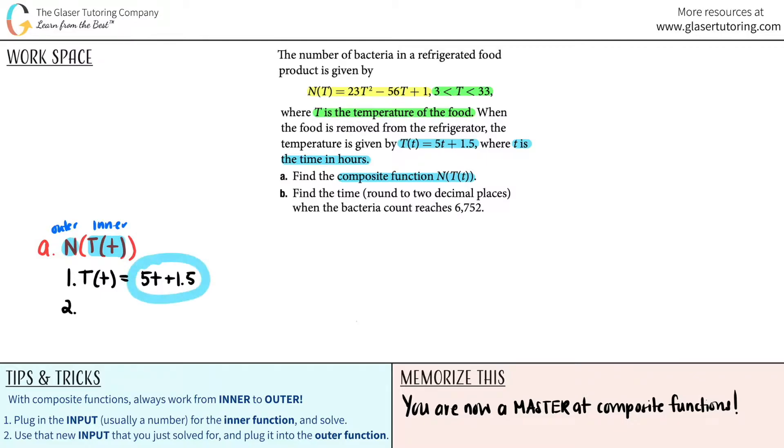Now that answer that we just got is the new input and we plug that in for the outer function. The outer function here was the n function, but instead of just typing in capital T, this is my new thing that I have to solve for. So this would be n(5t + 1.5). That means when I go back to my n function, which is highlighted in yellow, whenever you see a capital T, those are your variables you're now going to be plugging in this for it.